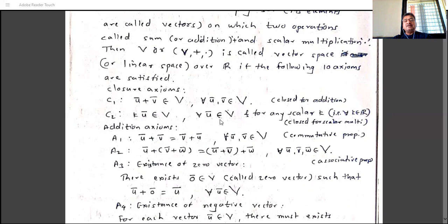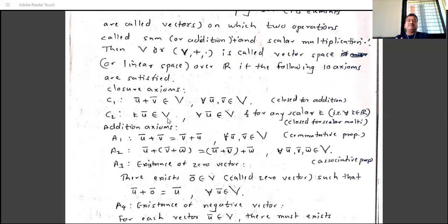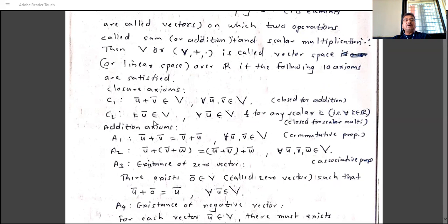To show C2 fails for the set of natural numbers: take k = 1/2 and Ū = 3. Then (1/2)(3) = 3/2, which does not belong to the natural numbers. Therefore C2 fails for the set of natural numbers. Note that C1 holds for natural numbers, but C2 fails, and therefore the set of natural numbers is not a vector space.